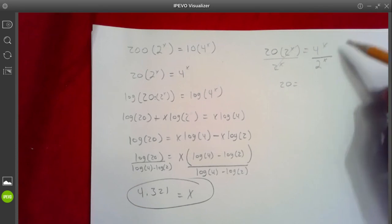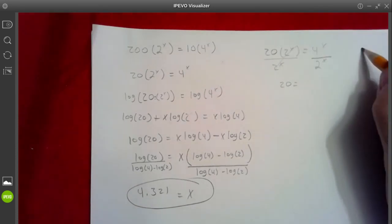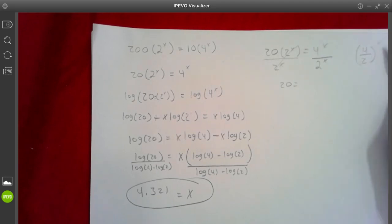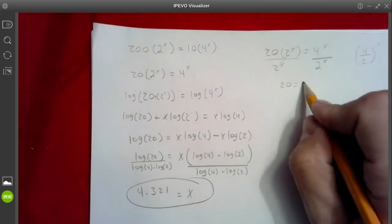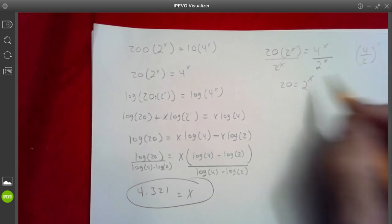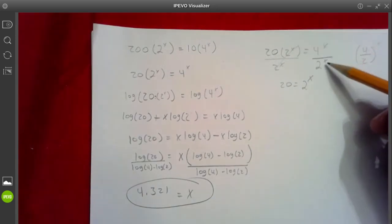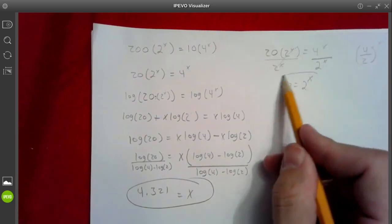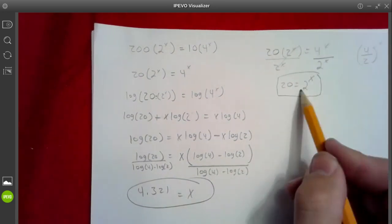On the right hand side, you could think of this as 4 over 2 to the x, where the exponent just gets distributed to both terms. So, this would just end up being 2 to the x. 4 to the x divided by 2 to the x is 2 to the x. And this would have been a way easier problem to solve.